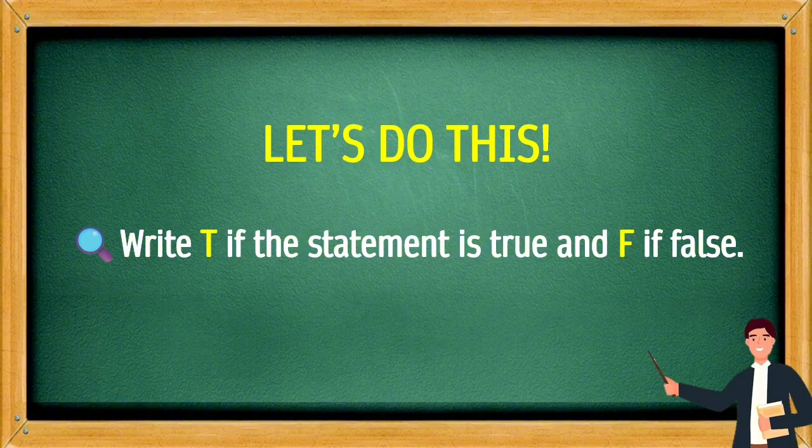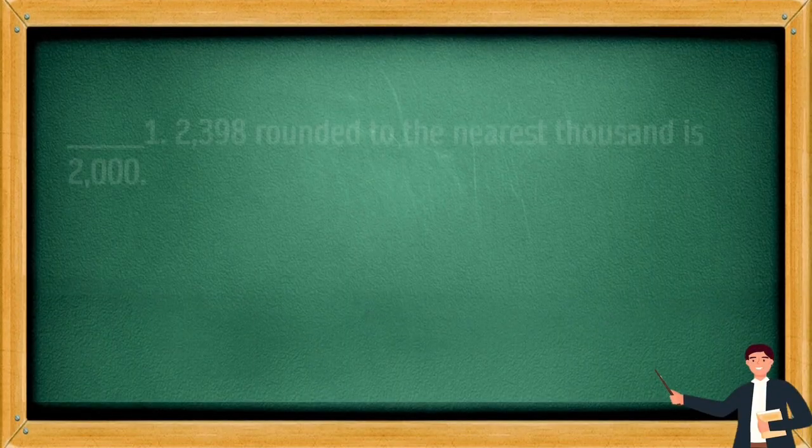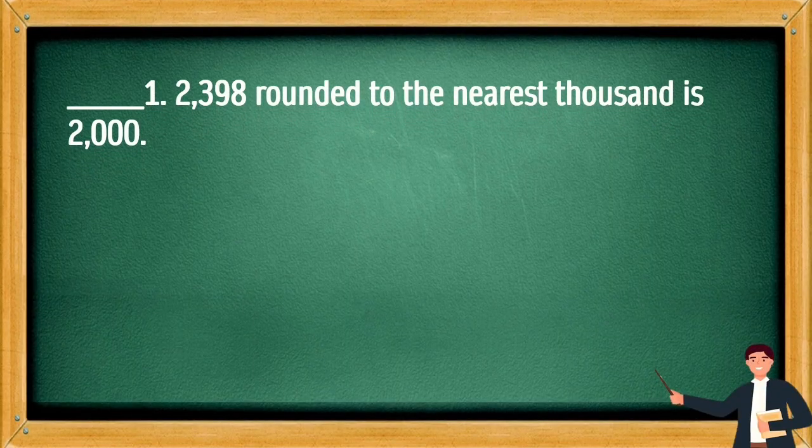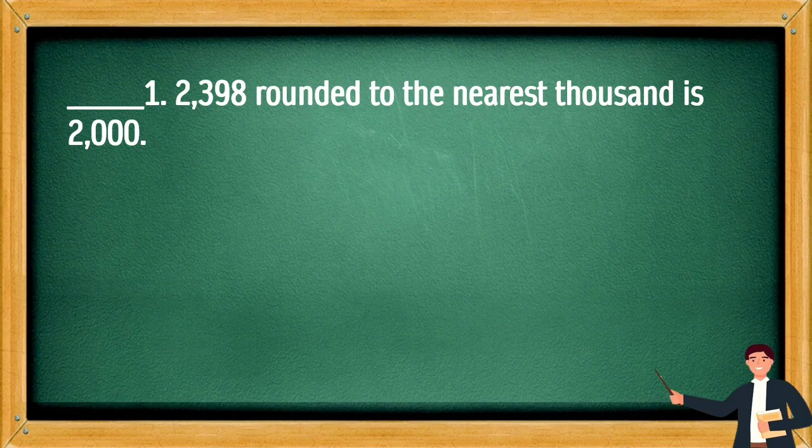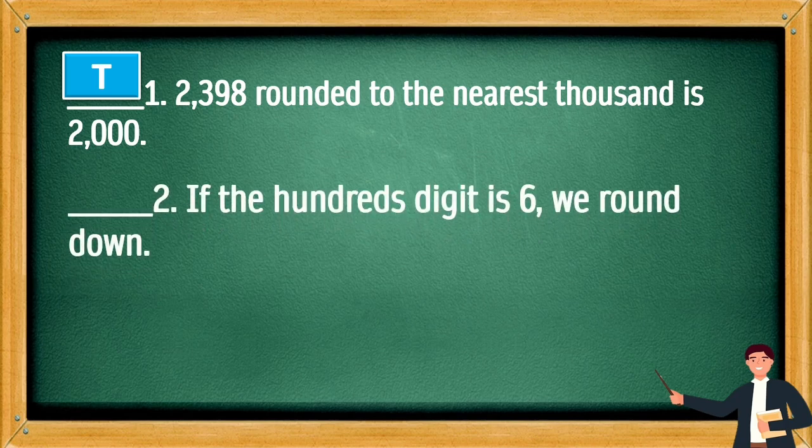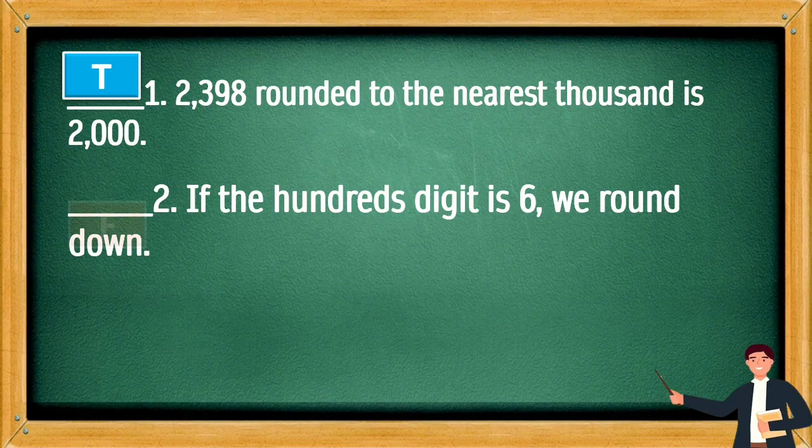Let's do this: Write T if the statement is true and F if false. 2,398 rounded to the nearest thousand is 2,000. This is T. If the hundreds digit is 6, we round down. This is F.